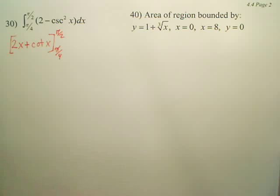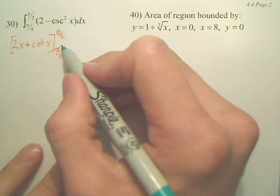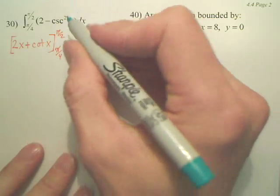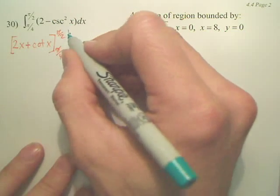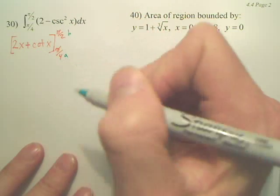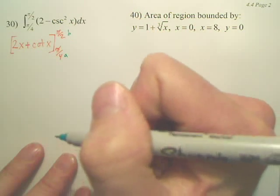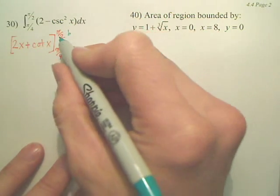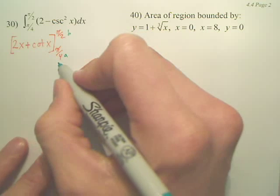Now, don't make a mistake that I've made before. You go from b to a. Remember, this is b and this is a. So we're going to plug in this one, and then plug in this one.